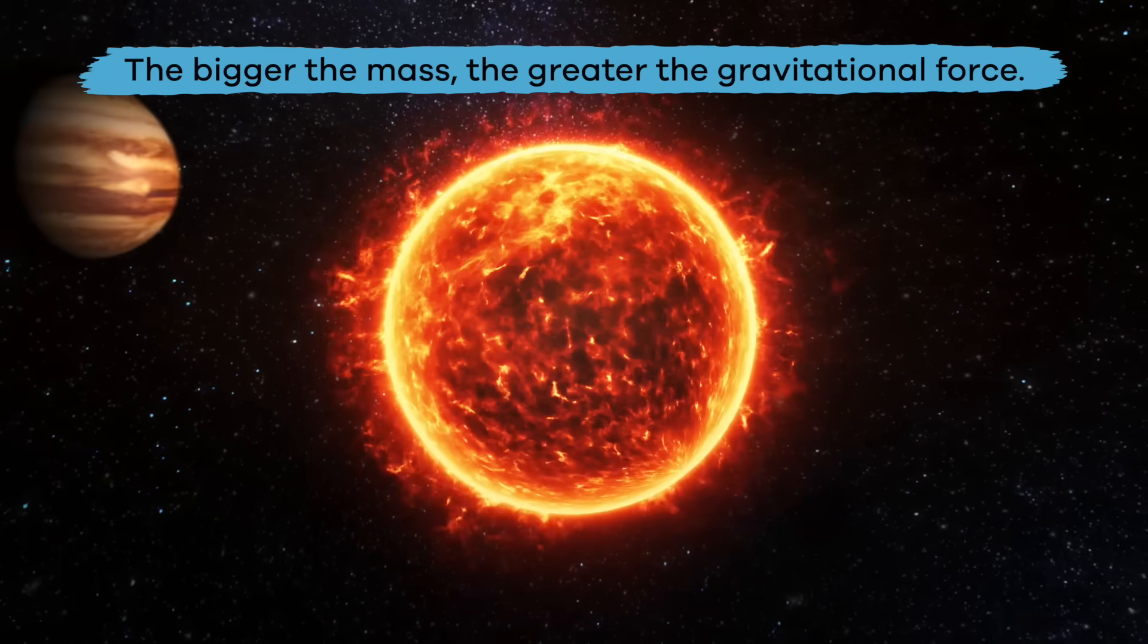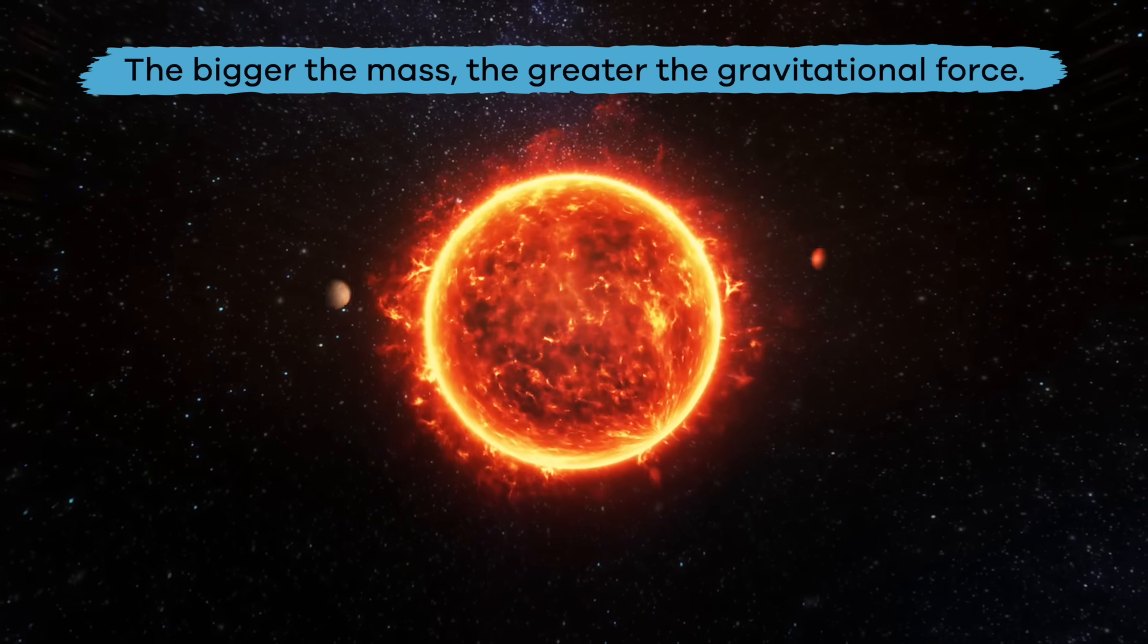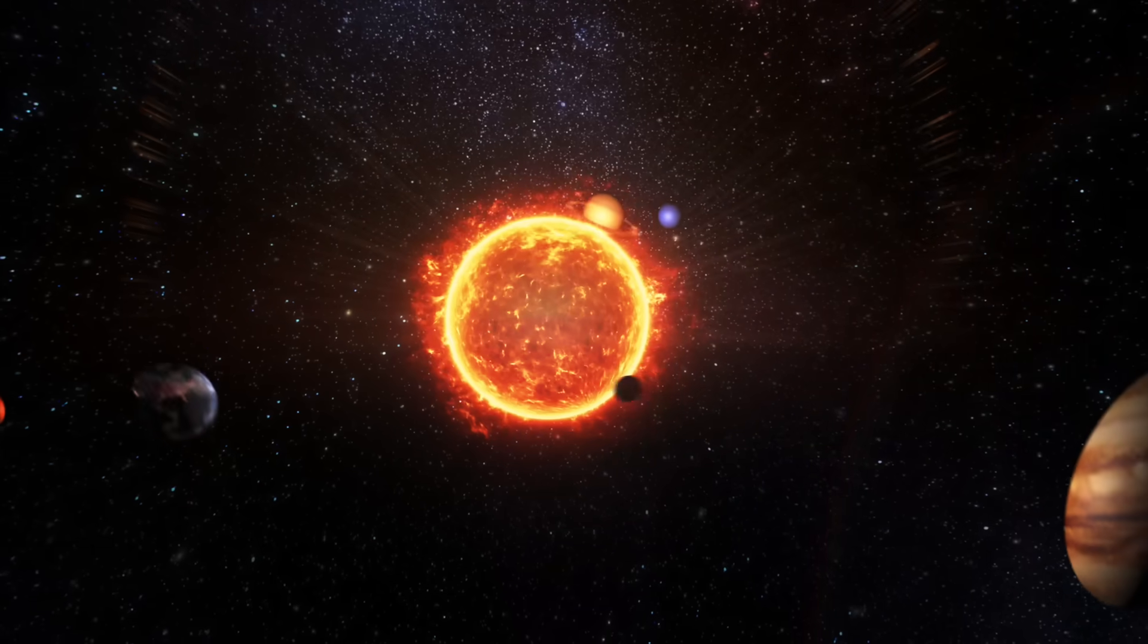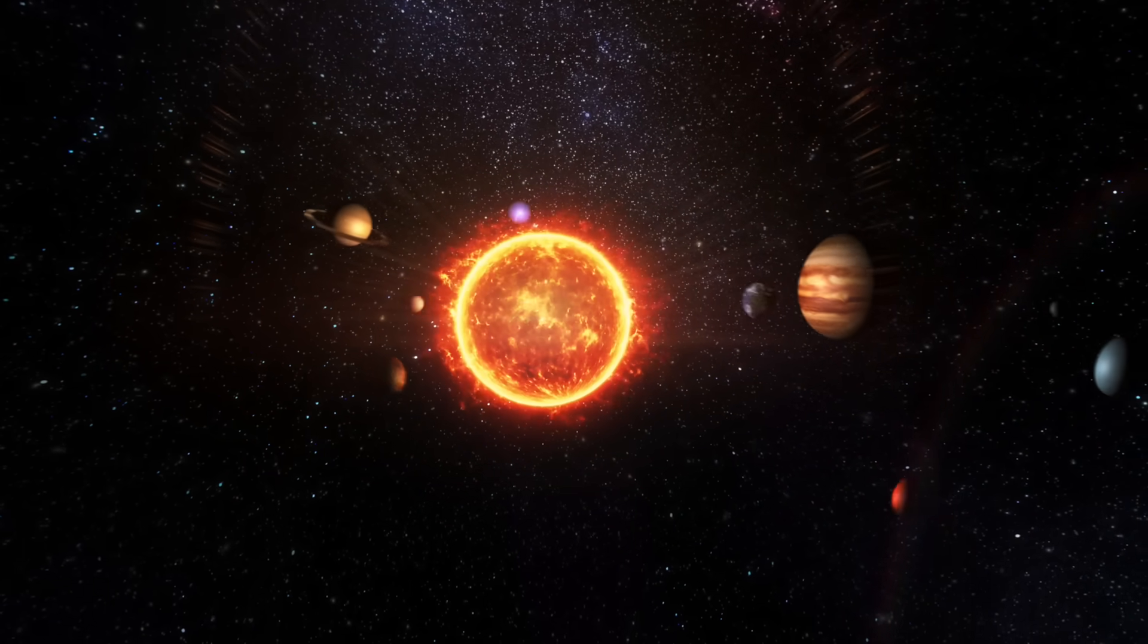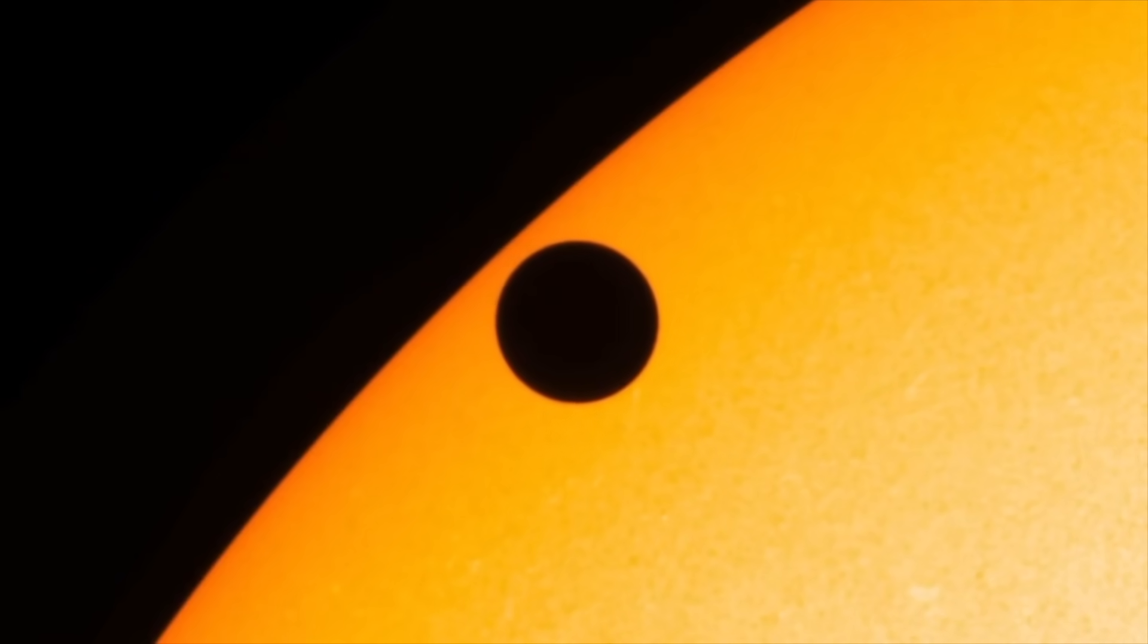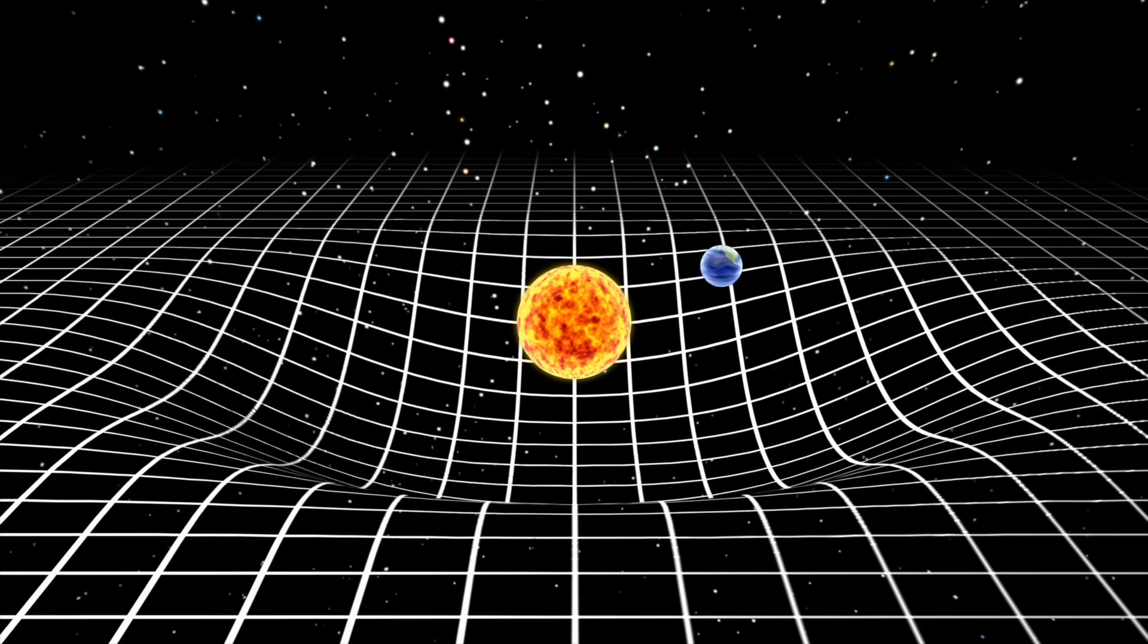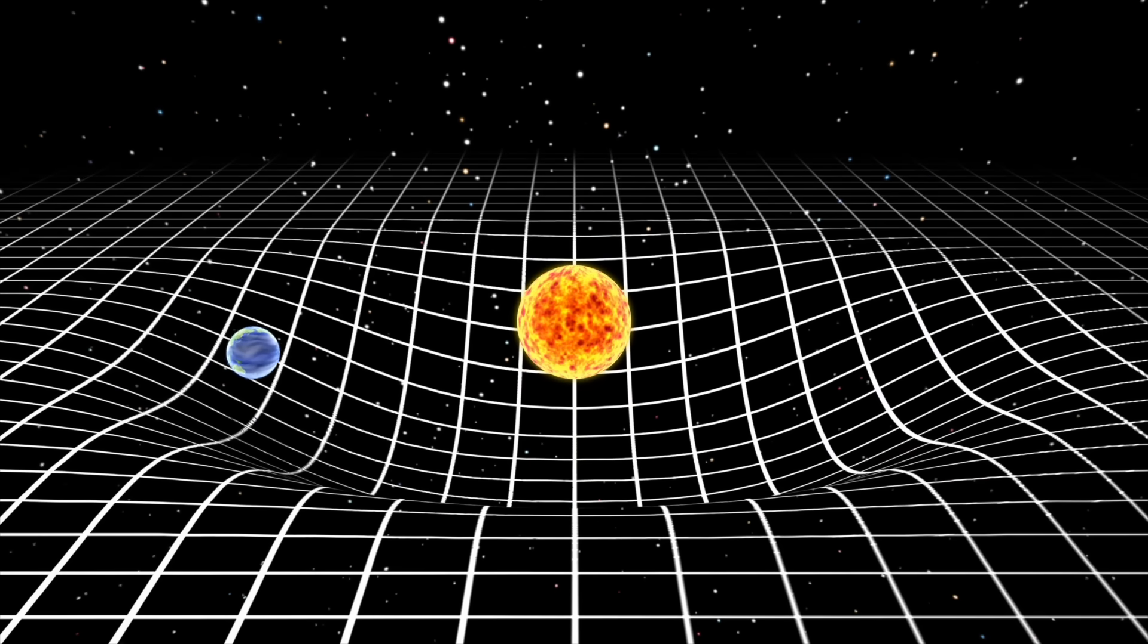Remember this. The bigger the mass, the greater the gravitational force. This is why all of the planets in our solar system revolve around the Sun. The Sun is so large compared to the planets that each planet is pulled or attracted to the Sun as they orbit around it.